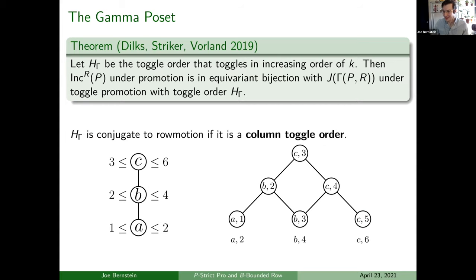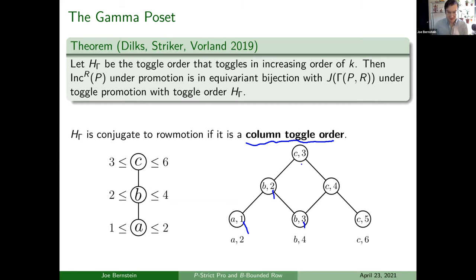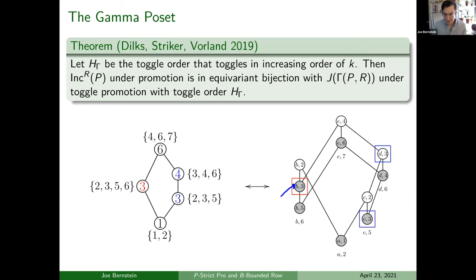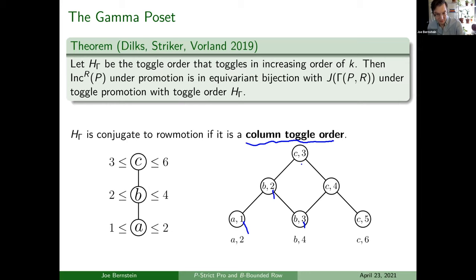In nice cases, toggle promotion is conjugate to row motion — row motion is the pretty toggle order we're after. It works if we have a so-called column toggle order, meaning if we toggle ones, then twos, then threes, they're all separate from each other. In the tangled example, you have sixes next to fours — bad news. But in the nice example, they are easily divided into columns: one, two, three, four, five. If you toggle in that order, through some algebra, that's the same as toggling top to bottom.